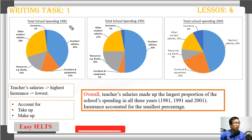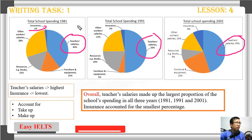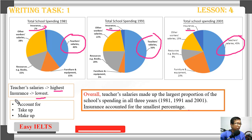Now we look at the overview. For the overview, you pick up two main features. In a pie chart, you talk about the highest and lowest. You can easily see teacher salary was the highest and insurance was the lowest. So the overview looks like this: 'Teacher salary made up the largest proportion of school spending in all three years. Insurance accounted for the smallest percentage.' Instead of 'accounted for,' you can also say 'take up' or 'make up.'